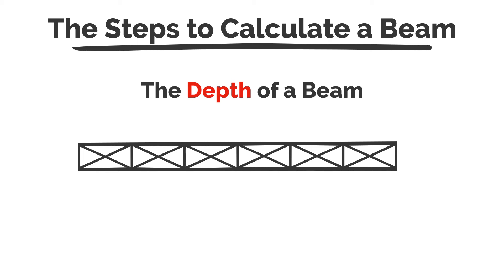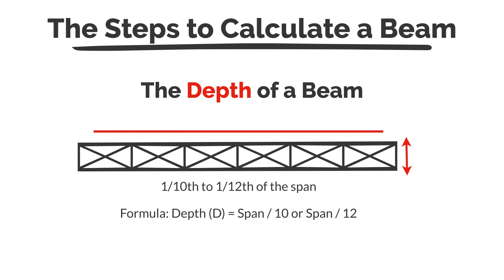Okay, so we'll look at the steps. Number one, how to calculate the depth of a beam. The depth of a beam is the vertical distance from the top to its bottom. A quick thumb rule is that the depth should be about one-tenth to one-twelfth of the span. So the formula we can use here is depth equals span divided by 10 or span divided by 12.